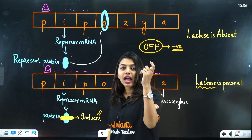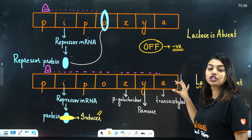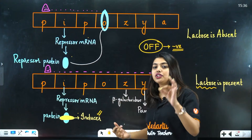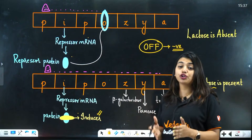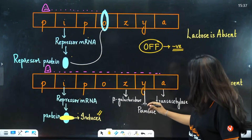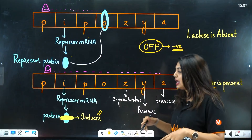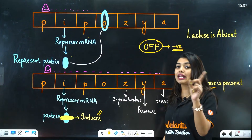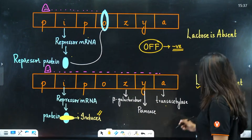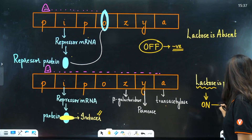With no block on the operator, RNA polymerase is free and continues transcription. As RNA polymerase moves forward, the structural genes become active and release beta-galactosidase, which breaks down lactose into galactose and glucose, permease, which increases cell permeability, and transacetylase, which enhances beta-galactosidase activity.